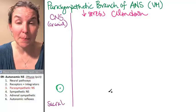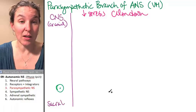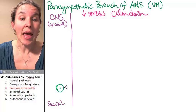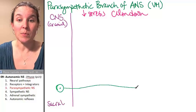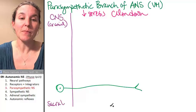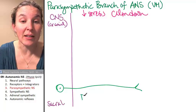We have a cell body embedded in the central nervous system in one of our specific locations. And this is called the preganglionic neuron.